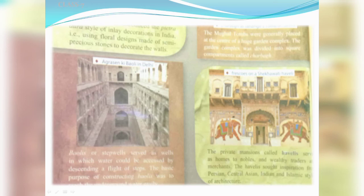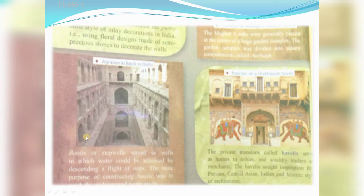Baoris or step wells served as wells in which water could be accessed by descending a flight of steps. Us time pe dams waghaira nahi hoti thi water store karne ke liye, toh aisi baoris ka nirman hua tha — step by step, agar aap steps niche jaoge toh you will meet the ground water. Ek example hai Agrasen ki Baoli in Delhi — isme basically water access karne ka kaam hota tha, aur kingdom ke liye jo water chahiye hota tha woh store kiya jata tha.